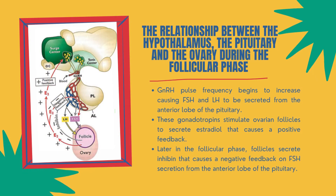Early in the follicular phase, GnRH pulse frequency begins to increase because of low progesterone, thus causing FSH and LH to be secreted from the anterior lobe of the pituitary. These gonadotropins stimulate ovarian follicles to secrete estradiol, a positive feedback on the neurons of the hypothalamic surge center, and the GnRH neurons secrete a burst of GnRH.